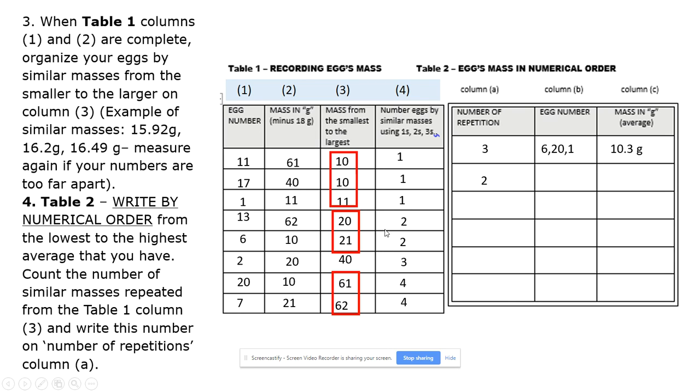This one has two repetitions. The numbers are 20, so you are going to write 2. And 21 has 7, so you are going to write 2 and 7 in column B of table 2. Then, you are going to take the average of these two masses. 20 plus 21 divided by 2. And record that in column C of table 2. And do so for the rest of the table.